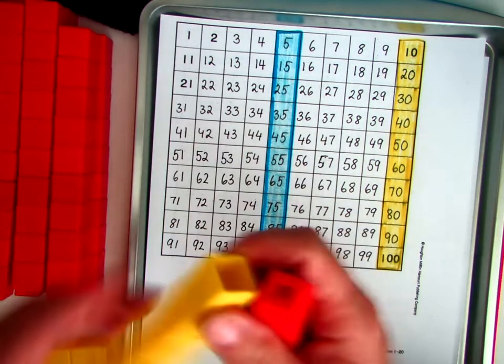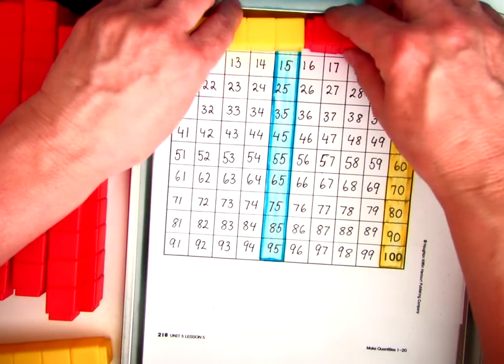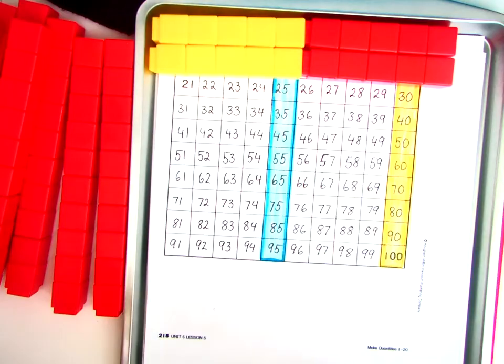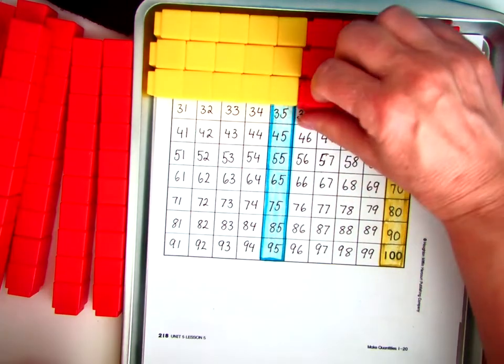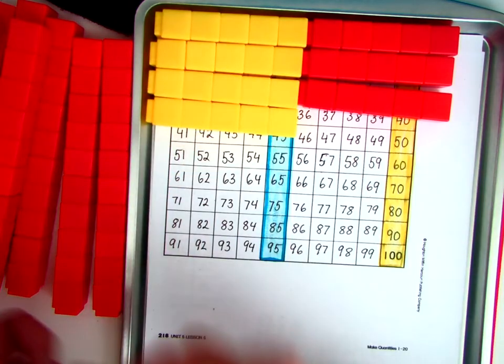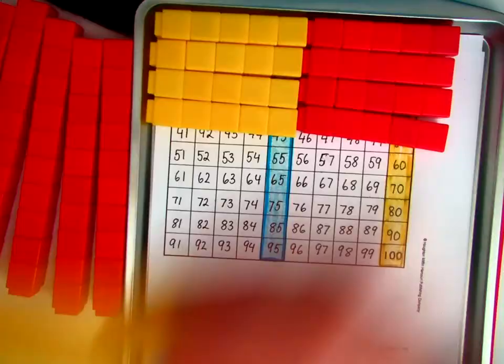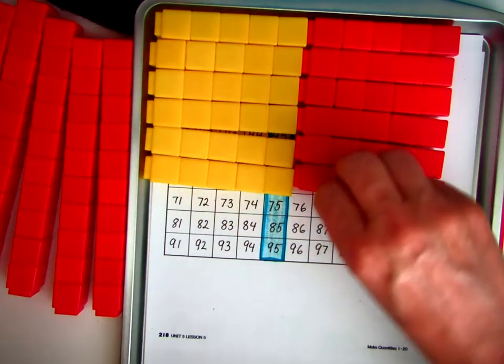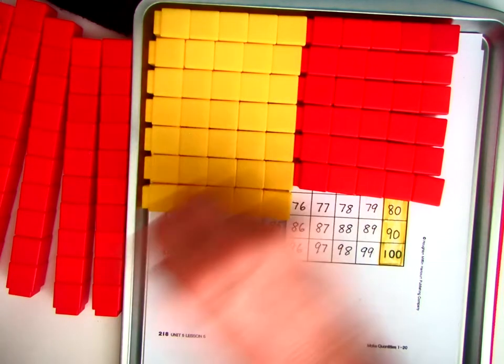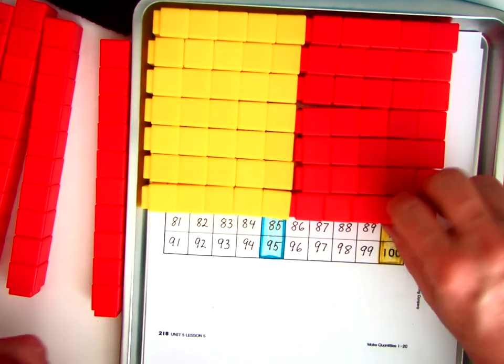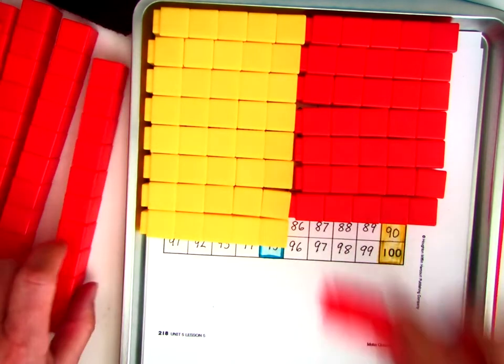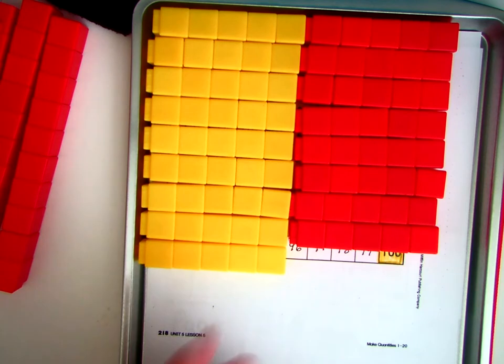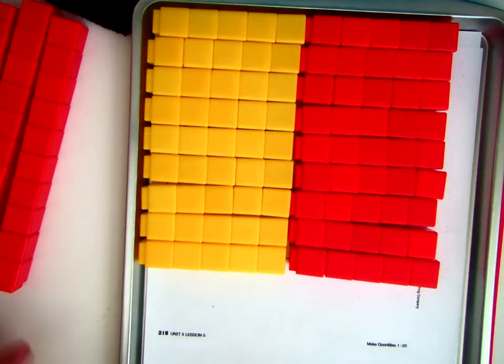It would be 5, 10, 15, 20, 25, 30, 35, 40, 45, 50, 55, 60, 75, 80, 85, 90, and 95, 100. Yay! So did you see that?